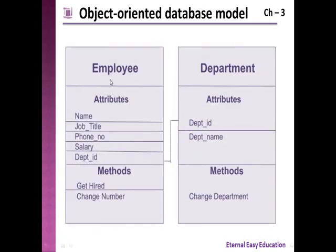In the example, the Employee object has attributes and methods. The Department object also has attributes and methods — just like a class in C++, which is a collection of data members and member functions. For Employee, the attributes are name, job title, phone number, salary, and department ID; and the methods are get hired and change number. For Department, the attributes are department ID and department name, and the method is change department. The department ID in Employee and the department ID in Department are interlinked, so data can be stored, organized, and manipulated easily.